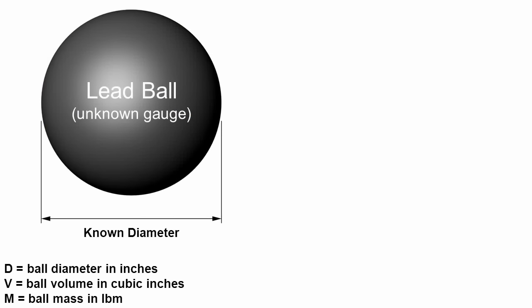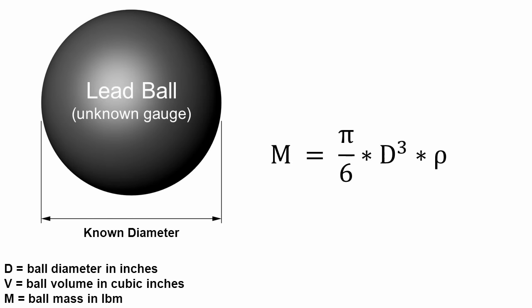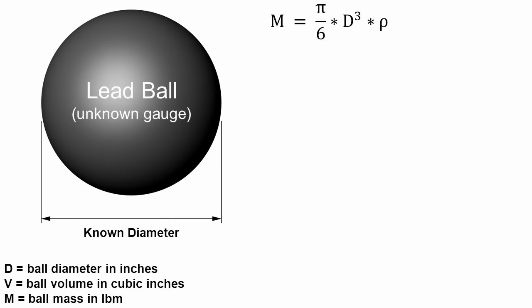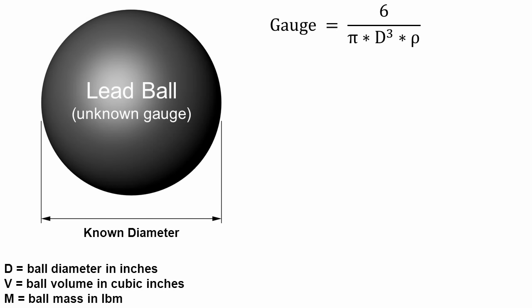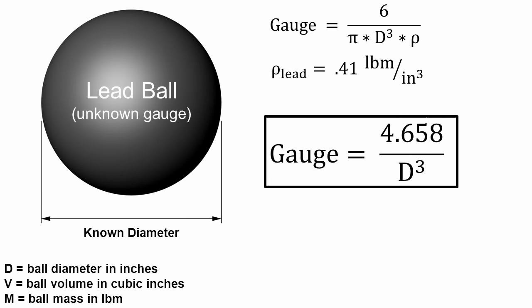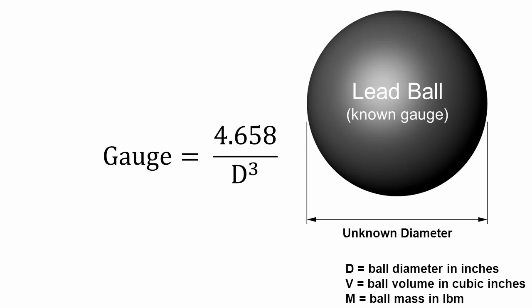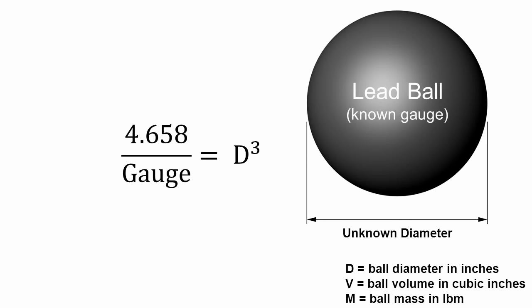The math here isn't too complex. The mass of a ball is simply volume times density, and since the gauge is the number of balls per pound, it is equal to the reciprocal of the ball's mass in pounds. This lets you easily work out the gauge equivalent of any bore diameter if you know the density of lead. To find diameter from gauge, simply rearrange the equation.